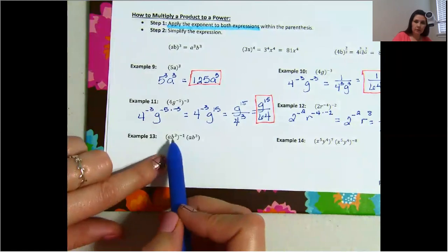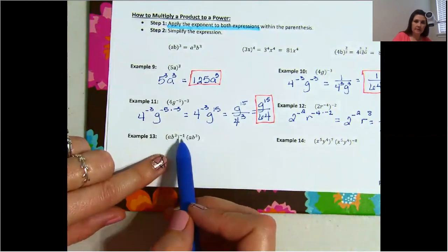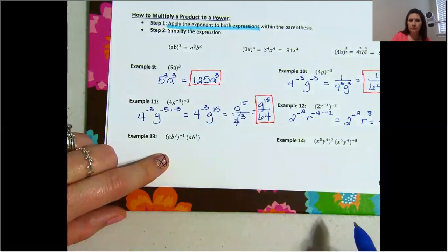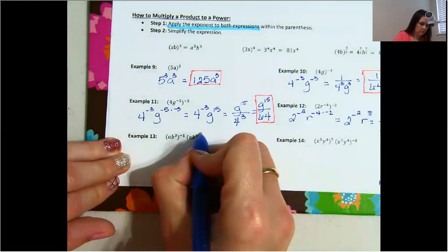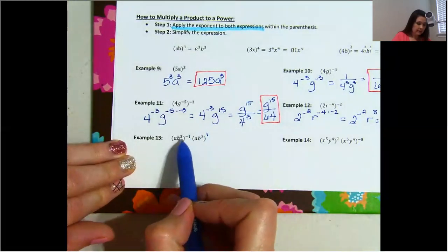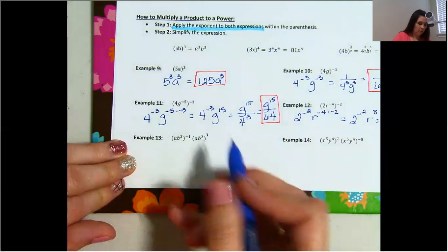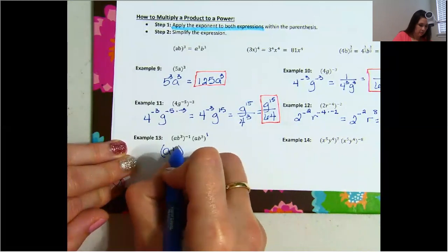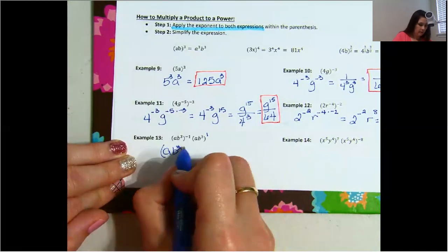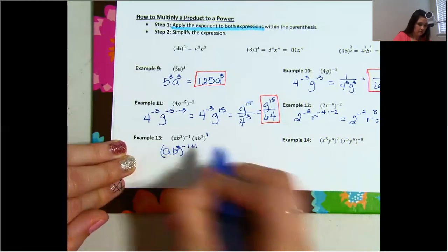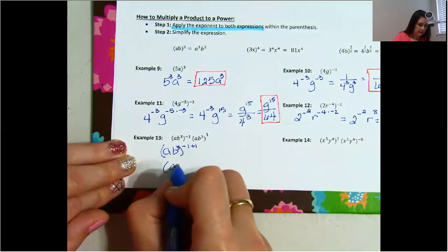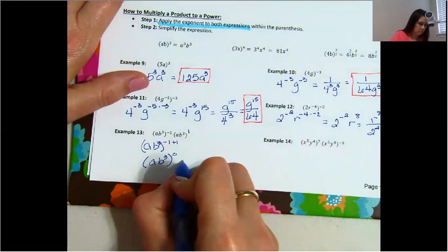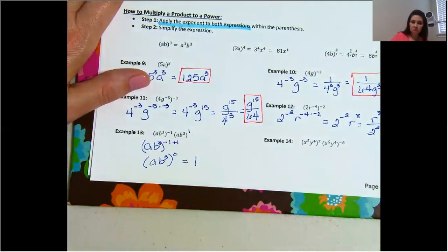Example 13. You have AB to the third power raised to the negative first power, and then AB to the third power raised to no power — so remember, if there's no exponent, we can say that's 1. You have the exact same base term AB to the power of 3. So you have negative 1 plus 1, which means you have AB to the power of 3 to the power of zero. Anything raised to the power of zero equals 1, so that's the answer.